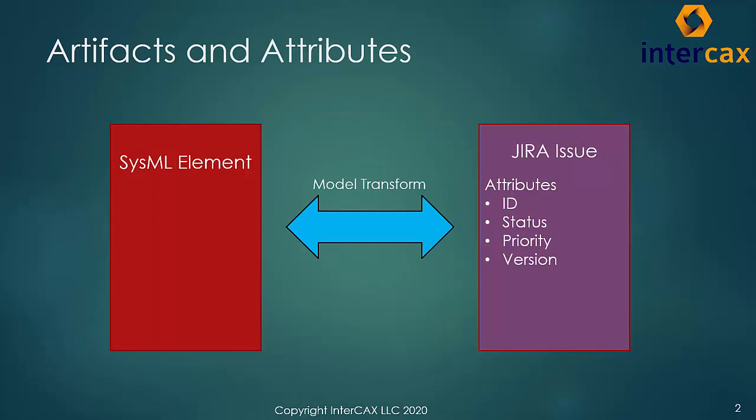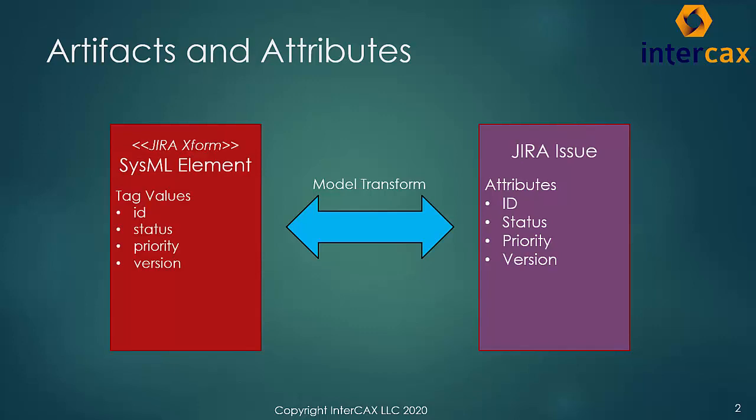A Cyndia model transform enables us to take a model element in one tool, such as Rhapsody, and use it to generate a related element, such as a Jira issue in another tool, or to do the same thing in reverse from Jira to Rhapsody. Frequently, that other element has attributes that we want to share with the SysML element. Special SysML stereotypes give us a way to store those attributes by adding them as tag values to the base SysML element type.